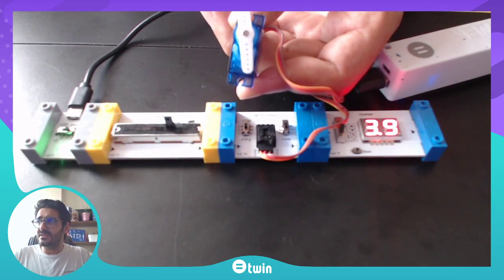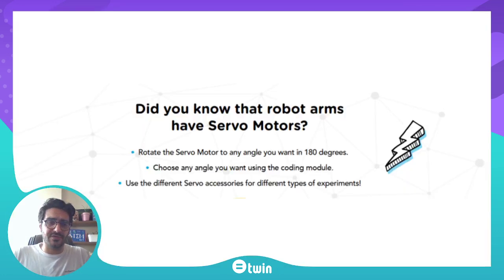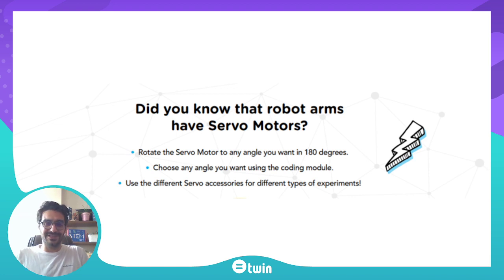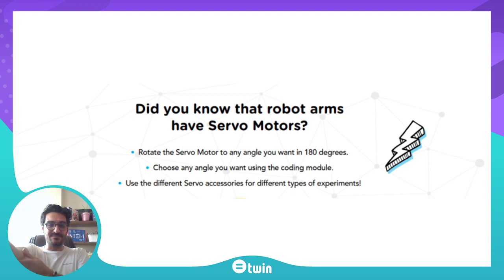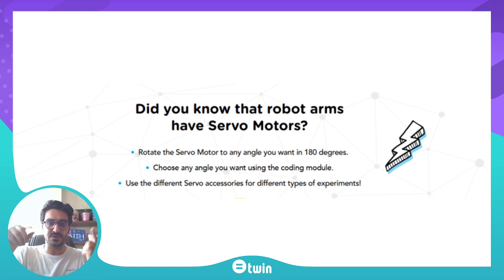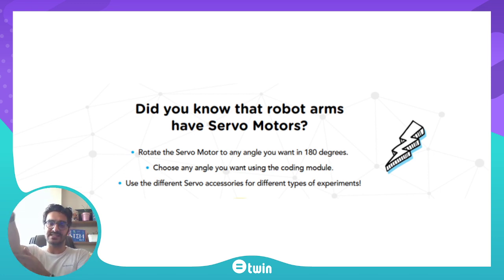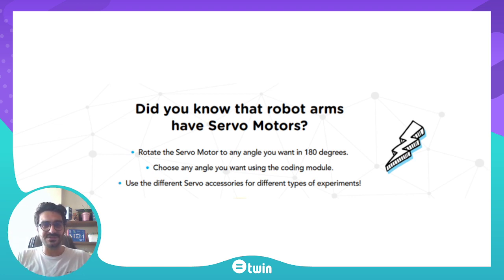All the robot arms in the world use servo motors, because robot arms and our joints have limited motion — not 360 degrees, not full circular motion — but there is limited motion in our joints as well. So all robot arms use servo motors to have motion like our bones and joints.